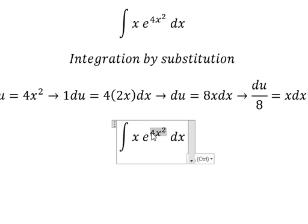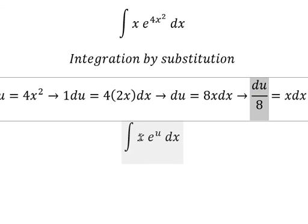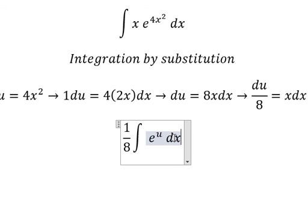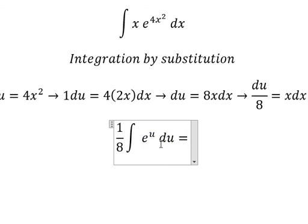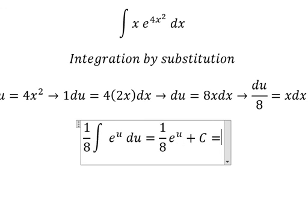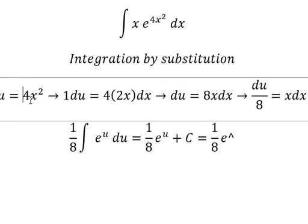Now we substitute into the integral, changing the x dx to du/8 and e^(4x²) to e^u. The integral of e^u is e^u + C. Substituting back u = 4x², we get (1/8)e^(4x²) + C.